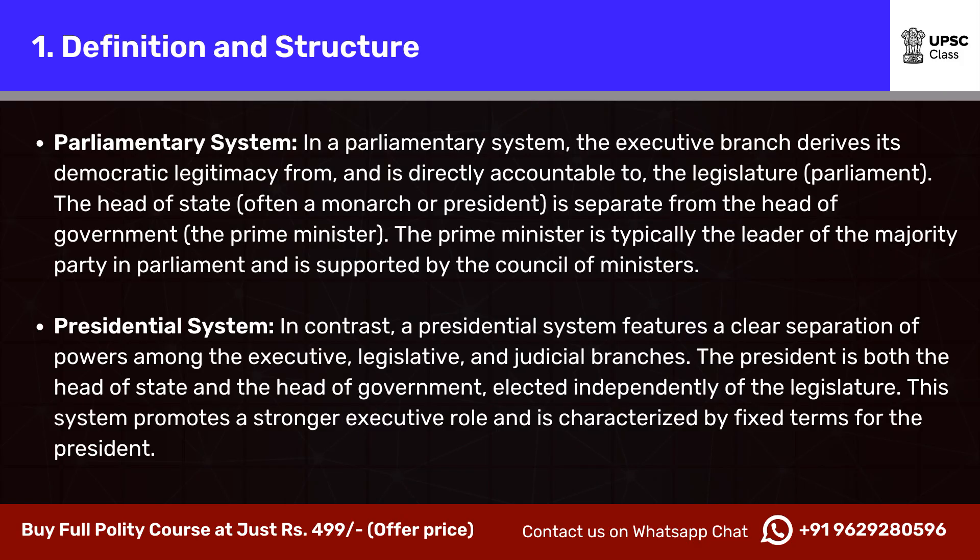Definition and Structure: Parliamentary System. In a parliamentary system, the executive branch derives its democratic legitimacy from and is directly accountable to the legislature, or parliament. The head of state, often a monarch or president, is separate from the head of government, the prime minister. The prime minister is typically the leader of the majority party in parliament and is supported by the council of ministers.